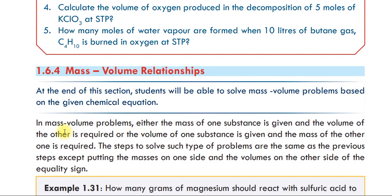In a mass-volume problem, either the mass of one substance is given and the volume of the other is required, or the volume of one substance is given and the mass of the other is required. The steps to solve these problems are the same as the previous steps, except placing the mass on one side and the volume on the other side of the equality.